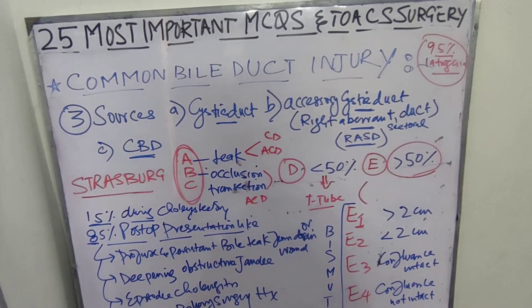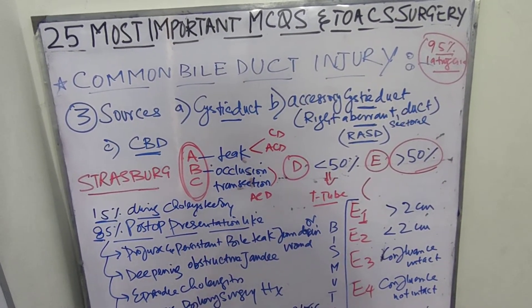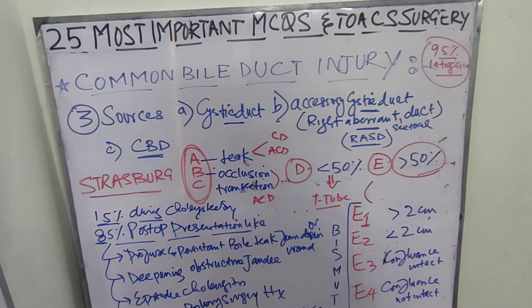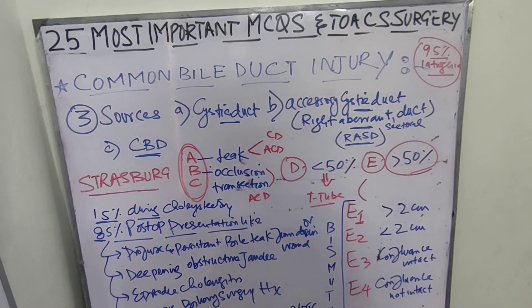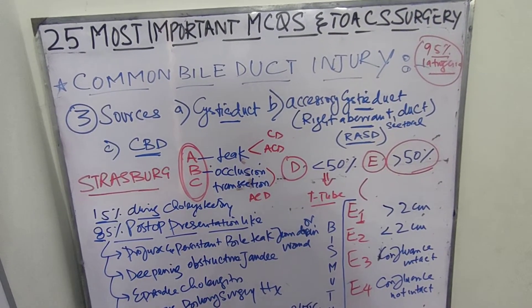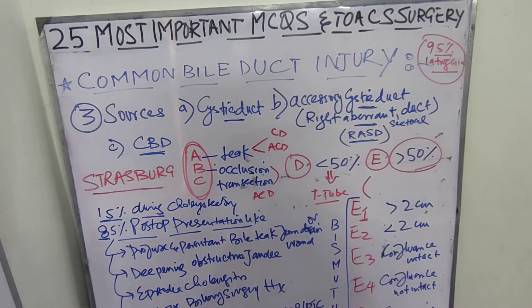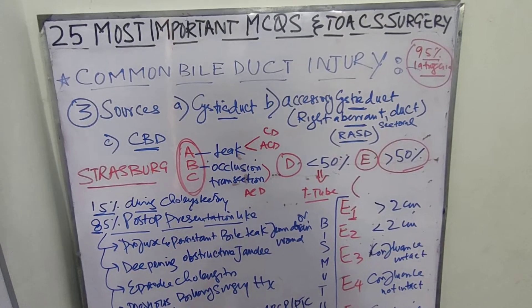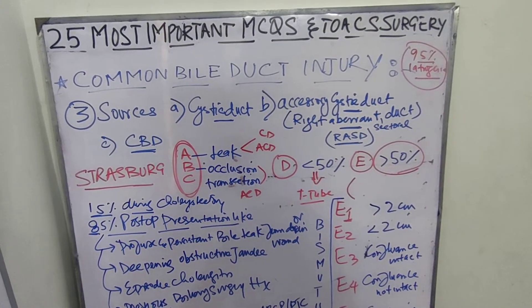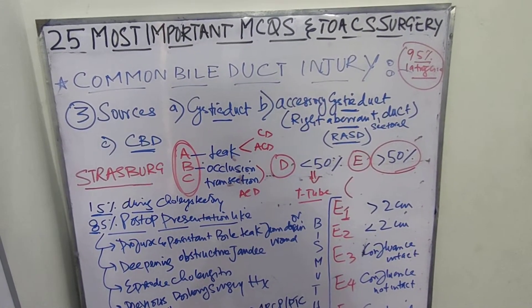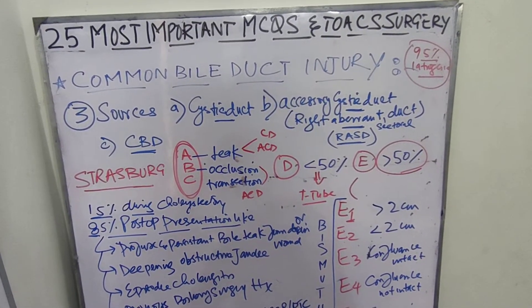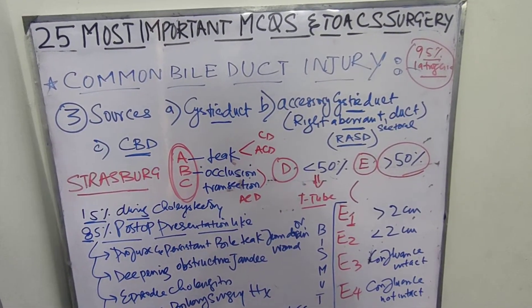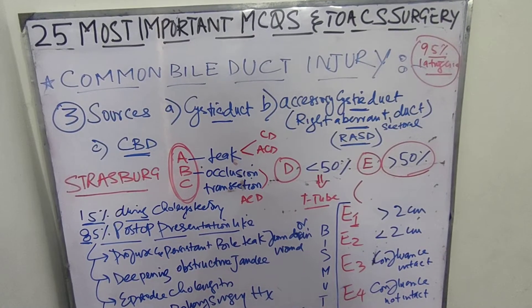D is common bile duct injury in which less than 50% of the circumference is involved — it is the lateral injury of the common bile duct only.